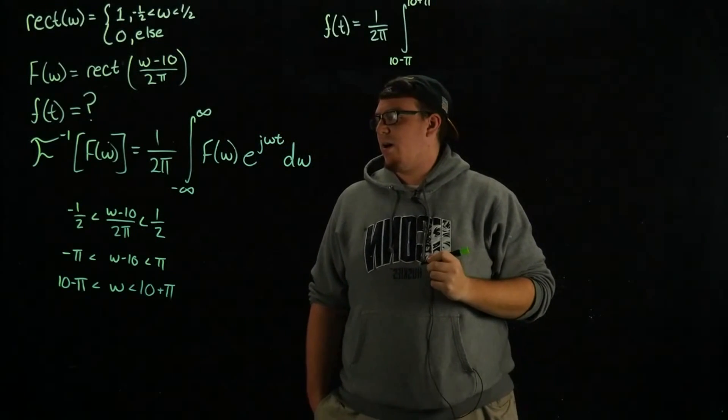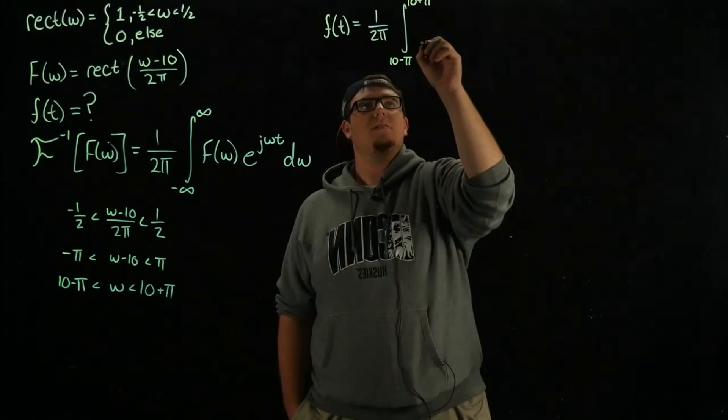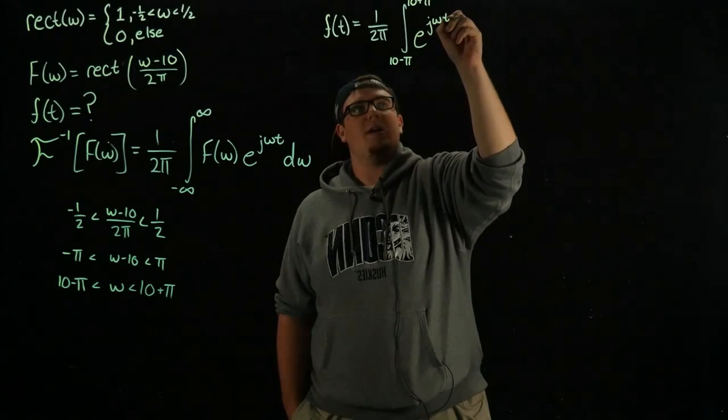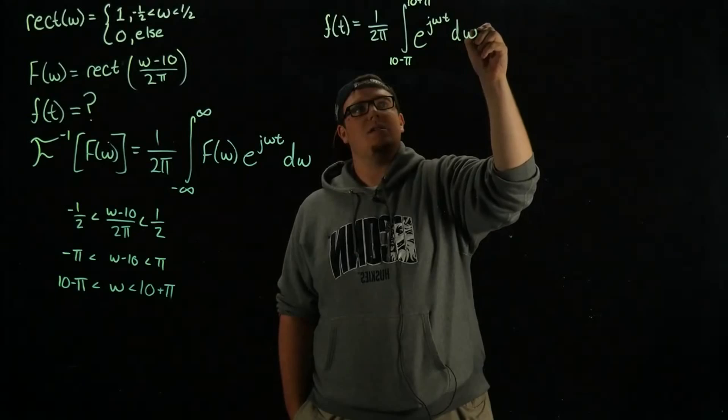We're going to be integrating 1, and then we have to add on the e to the j omega t d omega.